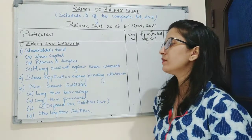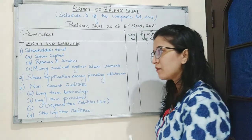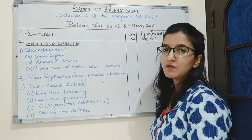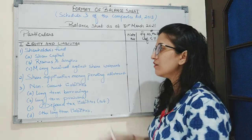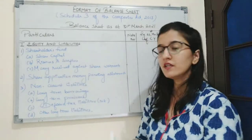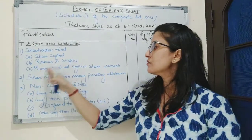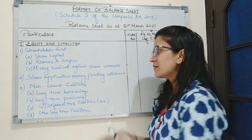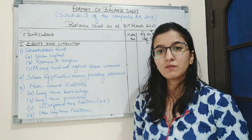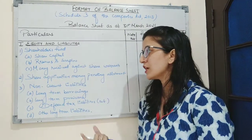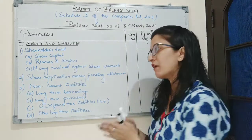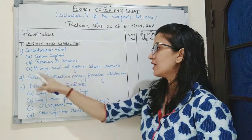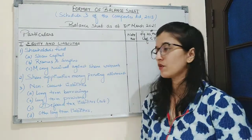Next is reserves and surplus — reserves and surplus are the income of the company. For example, securities premium reserve and debenture redemption reserve are included in reserves and surplus. Third is money received against share warrants. Sometimes the company needs money for a specific period of time, so the company issues shares, and when the company refunds the money, it will get its shares back — that is money received against share warrants.